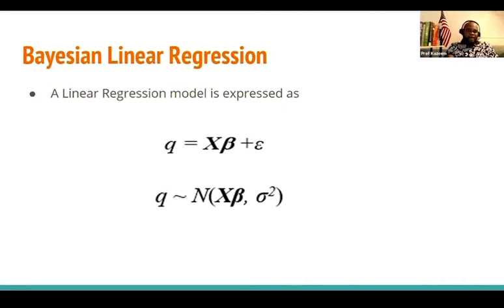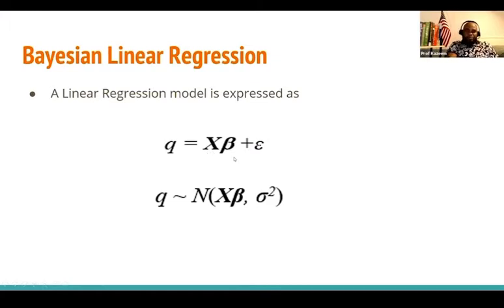That is the reason why model parameters are actually going to be treated as random variables, such that we need to seek the probability distribution of them. As you can see right now, the response variable Y is a function of the input variable, the regression parameter, and the noise — which I call the stochastic component. The response variable here is actually normally distributed with a given mean and variance.